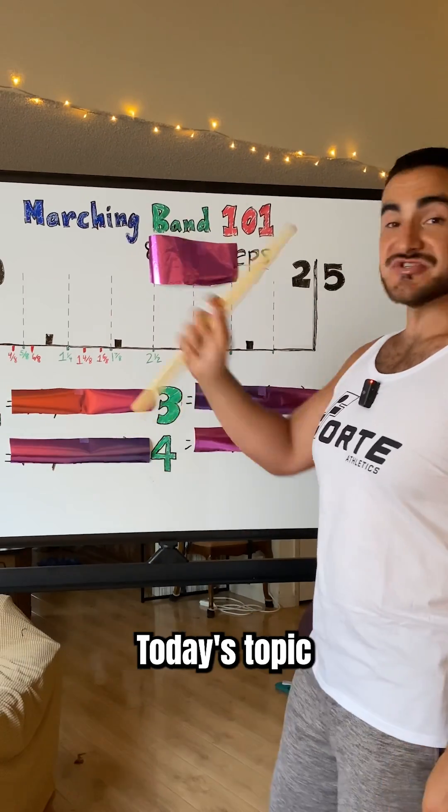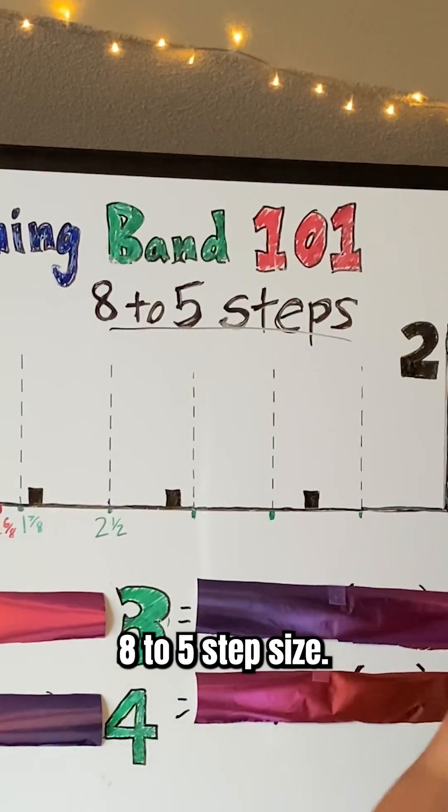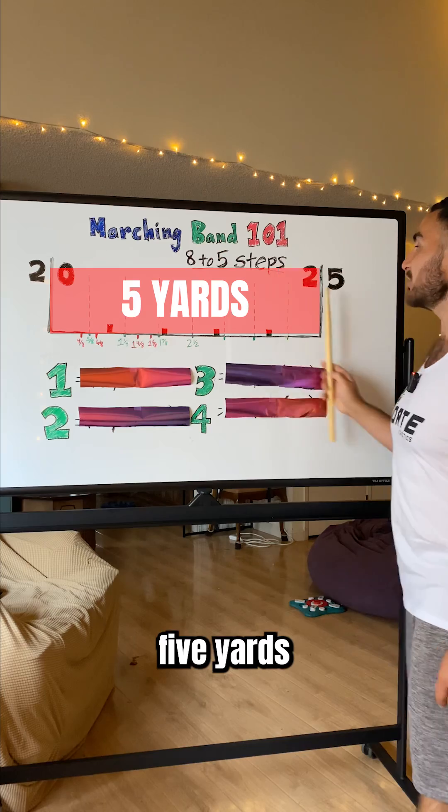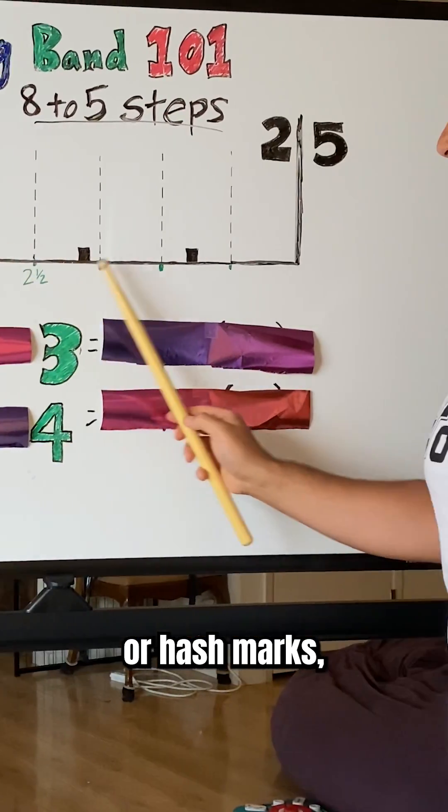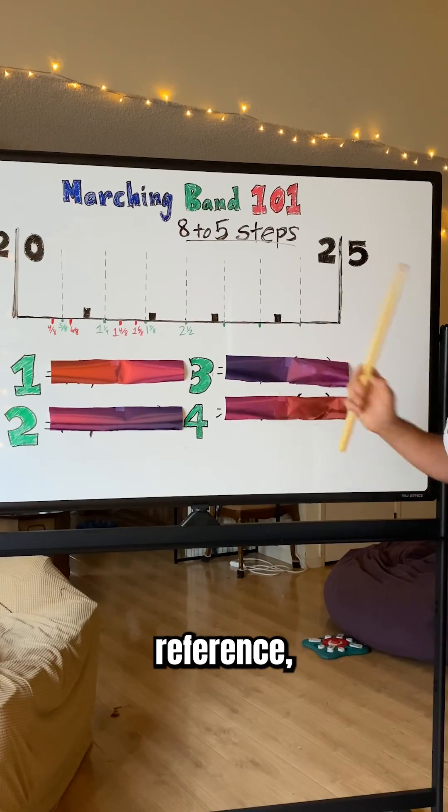Welcome to Marching Band 101. Today's topic is the 8 to 5 step size. We're covering 5 yards in 8 steps using the yard ticks or hash marks, which are all 1 yard apart, for visual reference.